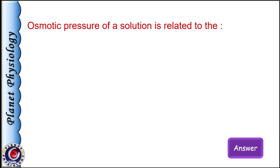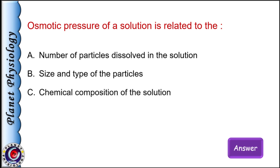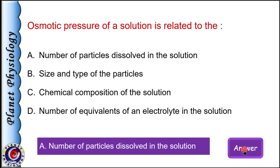Osmotic pressure of a solution is related to: a) number of particles dissolved in a solution, b) size and type of particles, c) chemical composition of the solution, and d) number of equivalents of an electrolyte in the solution. The correct answer is option A: number of particles dissolved in the solution. It is the molar concentration that decides osmotic pressure, not size, mass, or chemical composition. The unit used is osmoles — we often say milliosmoles per liter.